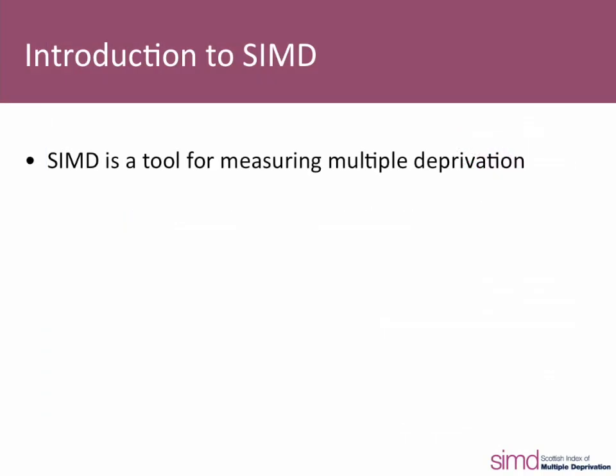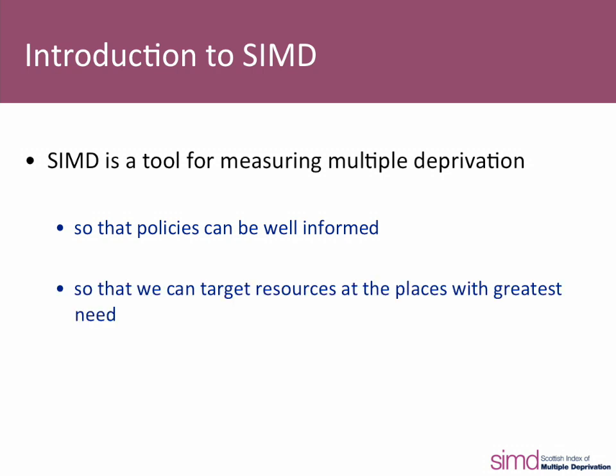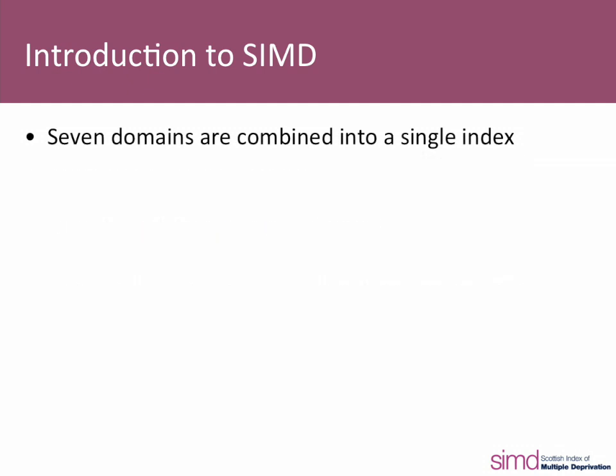The SIMD is a tool for identifying places in Scotland that suffer from multiple deprivation. It can inform policies and ensure that resources are targeted at the places of greatest need. There are many different aspects to deprivation, and the SIMD 2012 is calculated using seven different dimensions or domains, which are combined to form a single index.